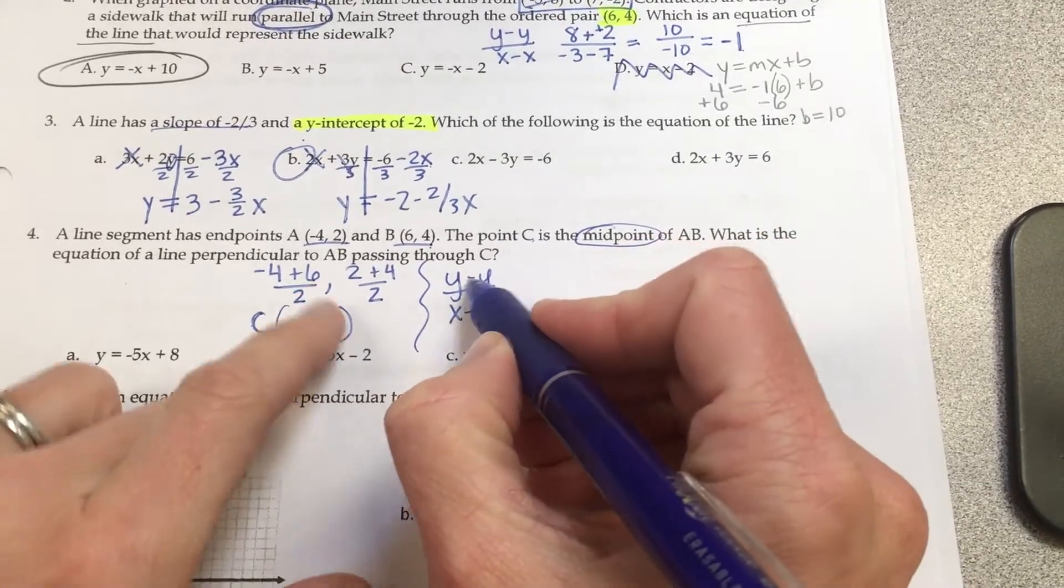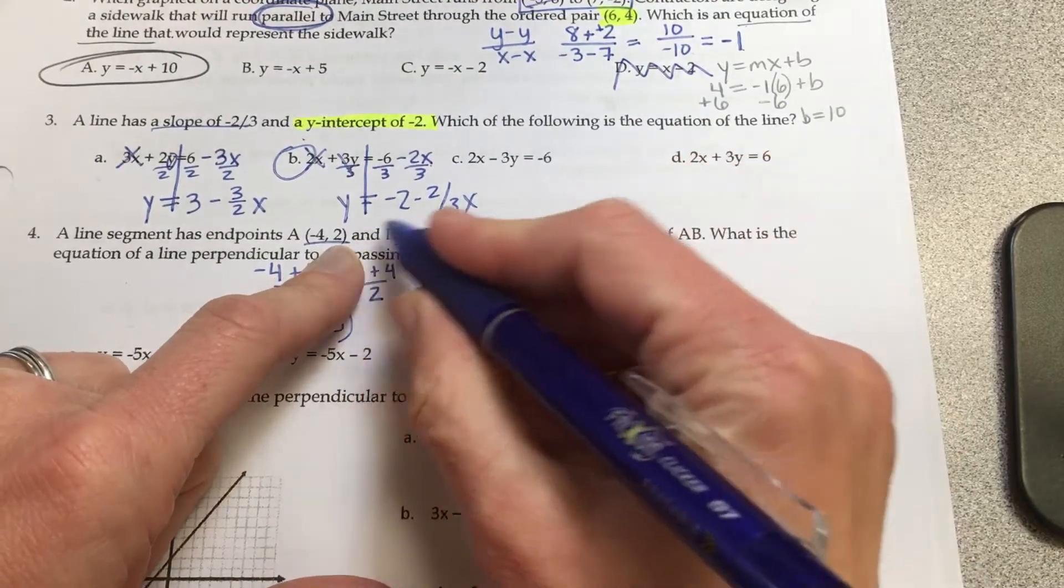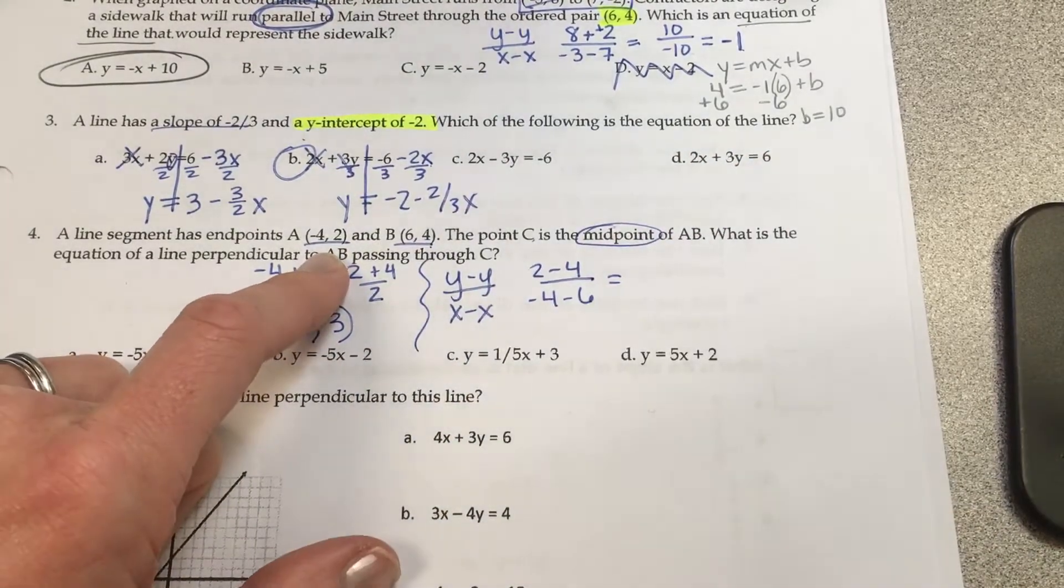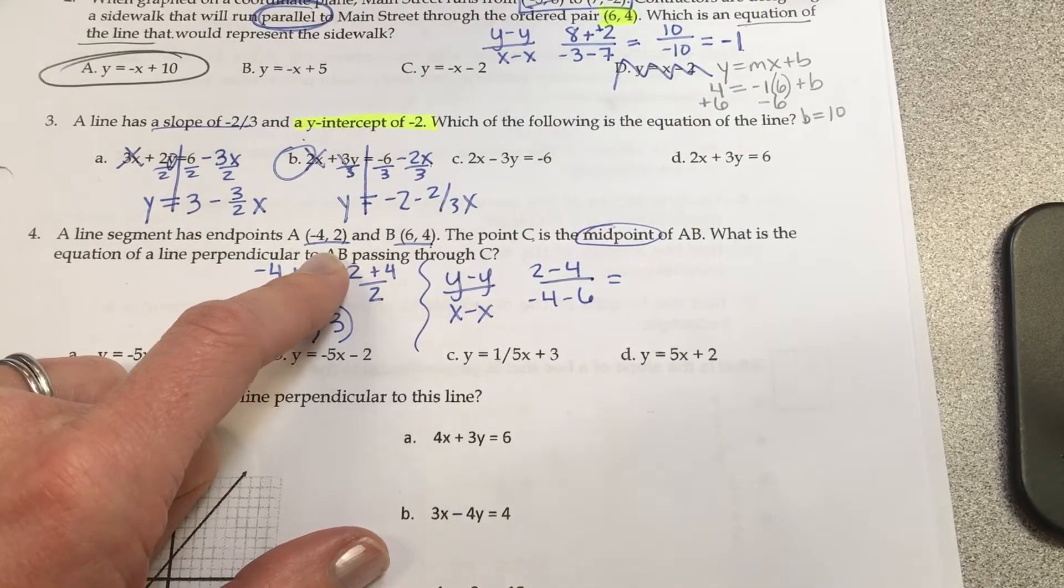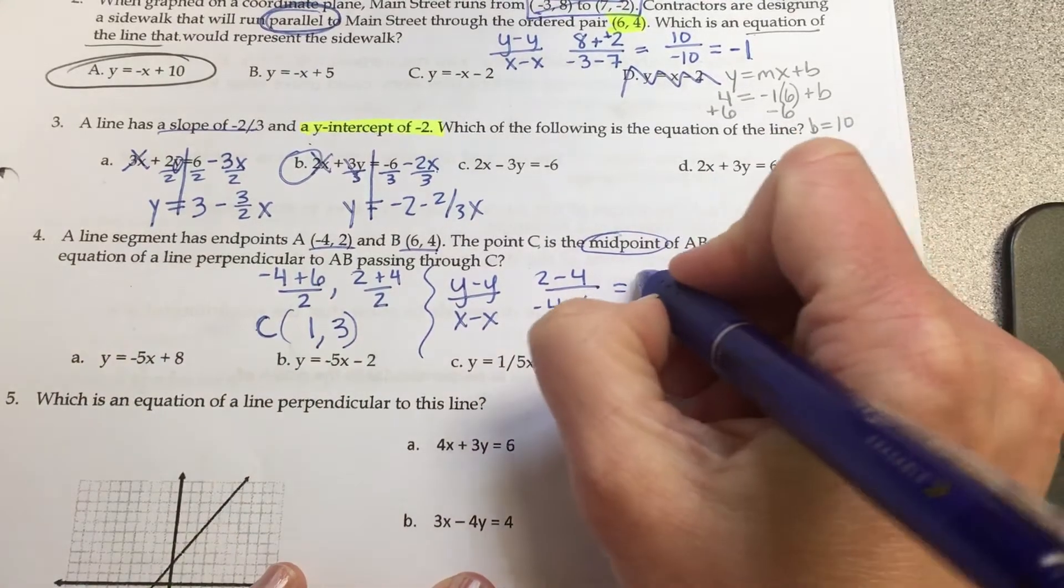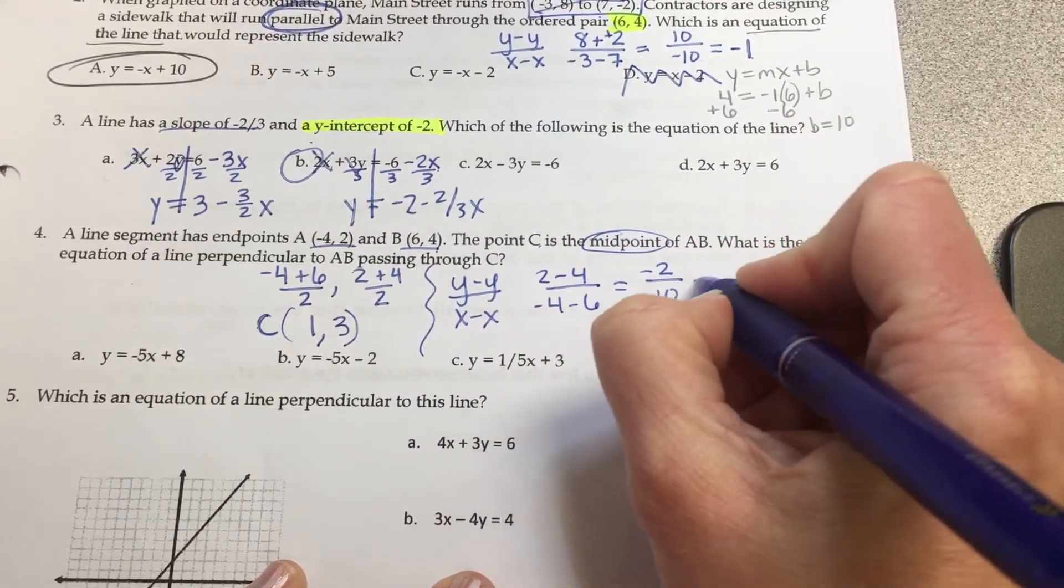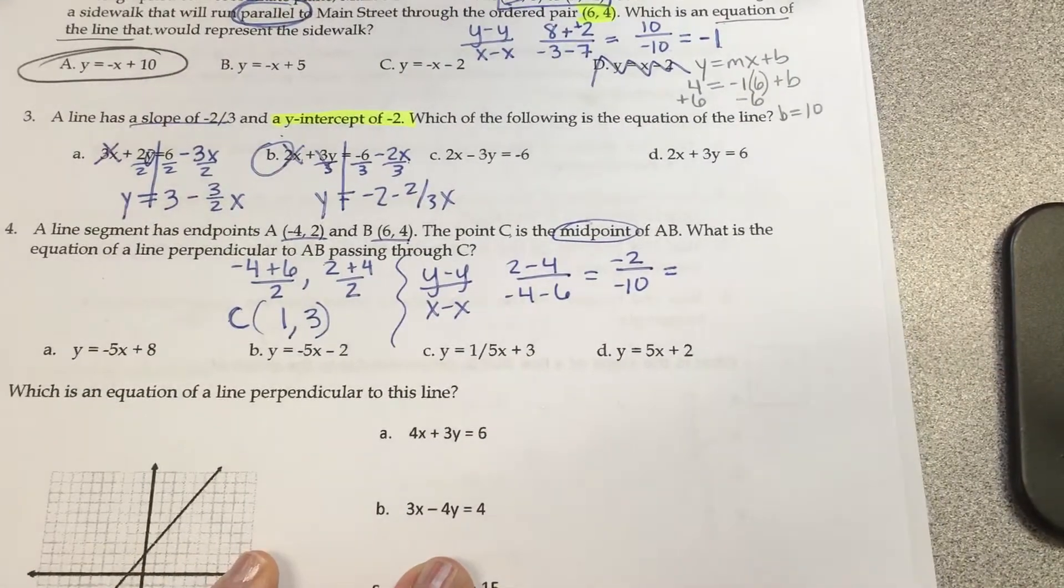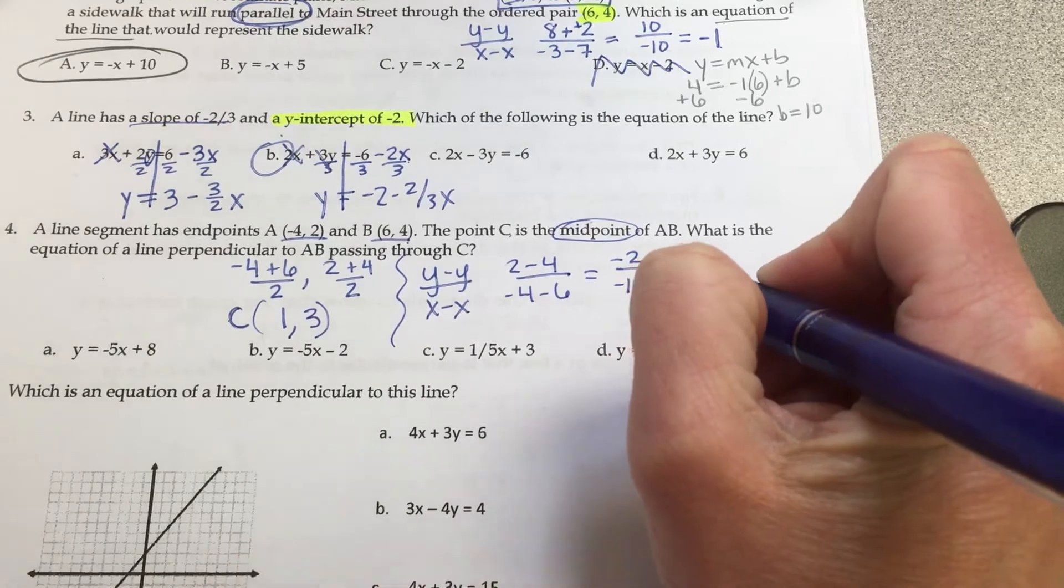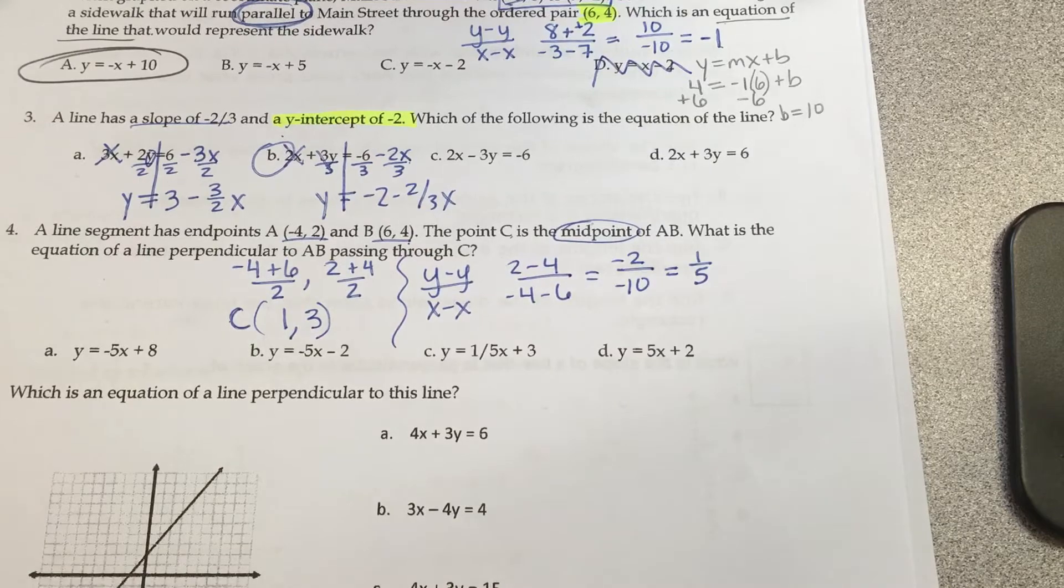Go ahead and get started. So we are doing (2 minus 4) minus y over (x minus x2), which is 2 minus 4, negative 4 minus 6. You should be writing this down. 2 minus 4 is negative 2, negative 4 minus 6 is negative 2 over negative 10, which equals one-fifth. So one-fifth is my slope.